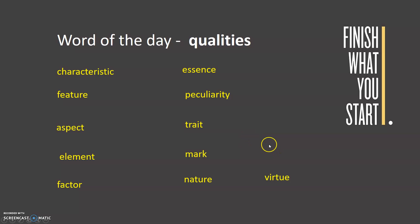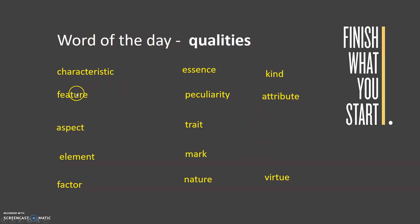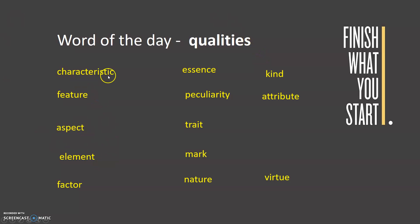'Kind' gives a similar meaning. 'Attribute' — so characteristics, feature, aspect, element, factor, and attribute can be replaced as is. If you're talking about a person, you should use characteristics, trait, nature, kind. Depending on the context, you should choose a particular word.